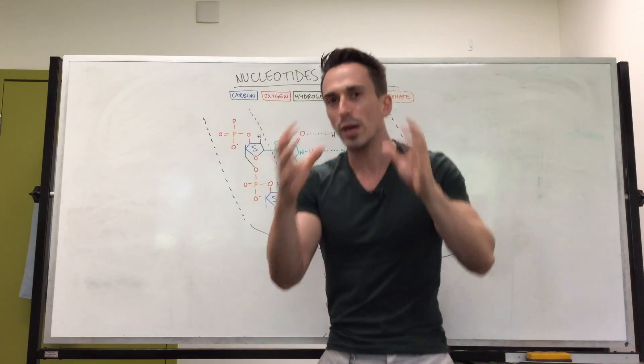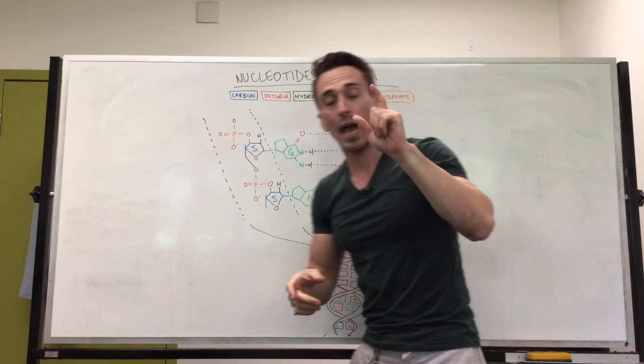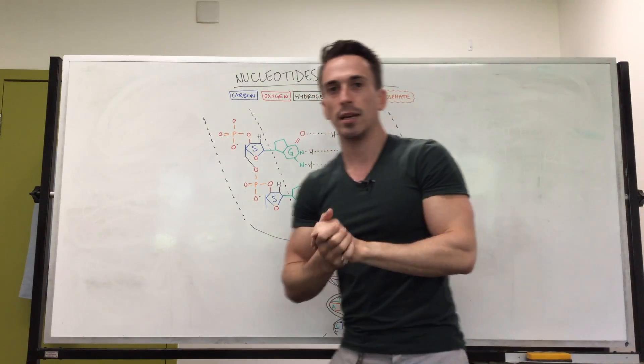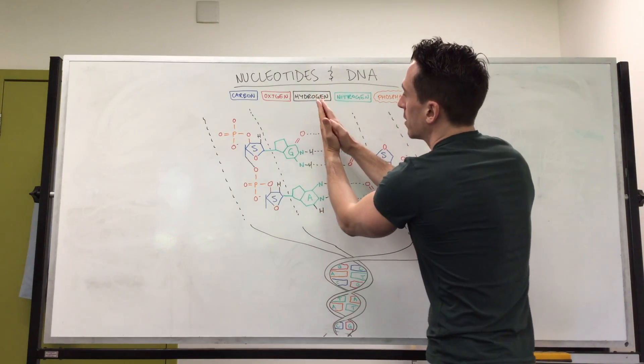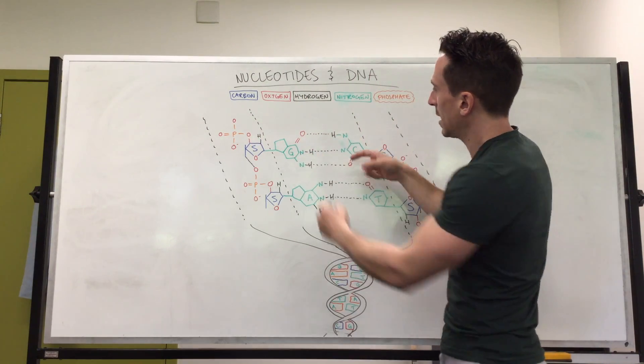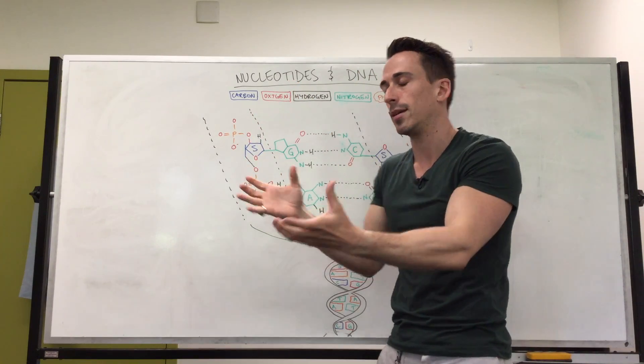Sometimes what we want to do when we do research is we want to make multiple copies of DNA and in order to do so we need to unravel this DNA. So unwrap it and open it up and we can do this using temperature. Increase the temperature it opens it up but when you've got more G's and C's there's more bonds, the temperature needs to be greater in order to open this DNA up.